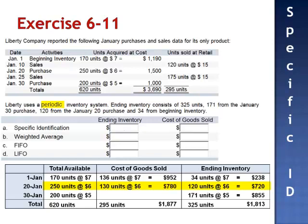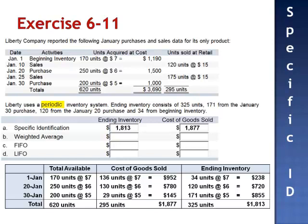130 multiplied by $6 is $780. And of the 200 units purchased on January 30, 171 units are still in ending inventory, so the remaining 29 units must have been sold. 29 multiplied by $5 is $145. $952 plus $780 plus $145 is $1,877. The value of ending inventory is $1,813 and cost of goods sold is $1,877.